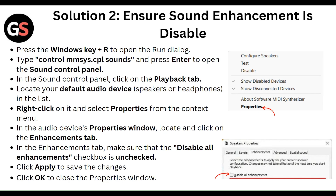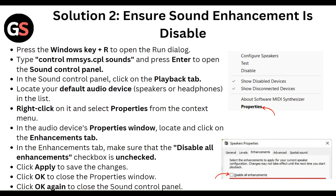Next, ensure sound enhancement is disabled. Press the Windows key plus R to open the Run dialog and type 'control mmsys.cpl' and press Enter to open the Sound Control Panel. In the Sound Control Panel, click on the Playback tab and locate your default audio device like a speaker or headphones in the list.